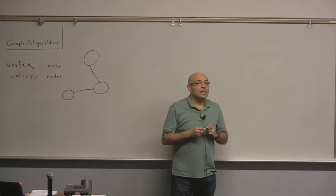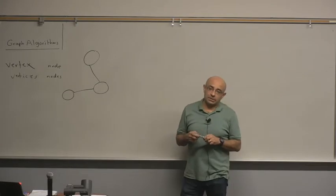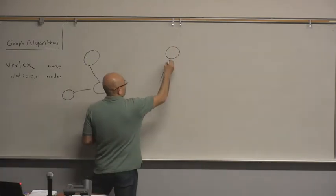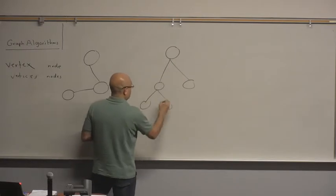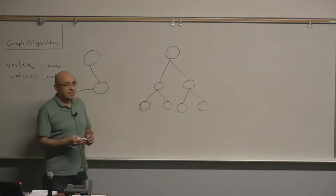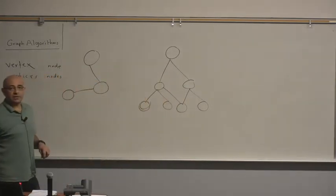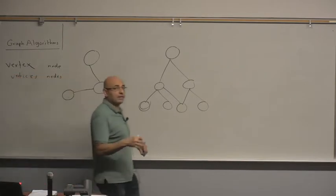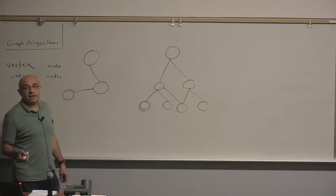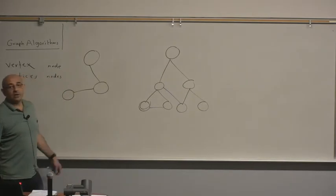A tree has a root node. The tree is a special case of a graph — a special kind of graph. In a rooted tree, the tree does not have to be rooted, but in a tree each node will have a single parent. If you add an edge that creates a cycle, this is no longer a tree — it becomes a general graph. The graph is more general than a tree.